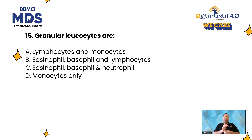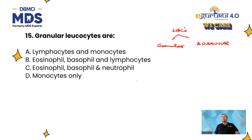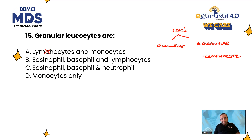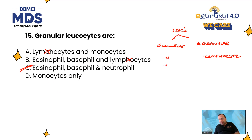Granular leukocytes: WBCs can be divided into granular versus agranular leukocytes. Lymphocytes are agranular leukocytes — they do not have granules. Monocytes are actually granular. All other cells — neutrophils, eosinophils, basophils, and monocytes — are granular in nature. So lymphocytes are the agranular ones.